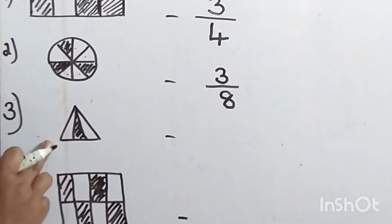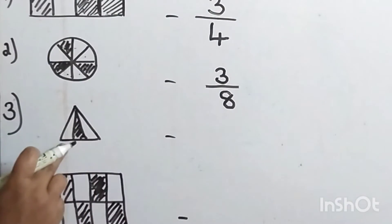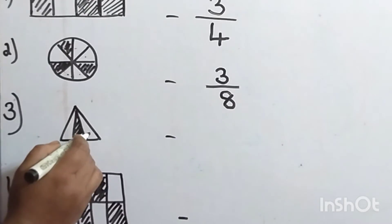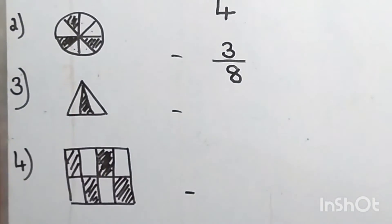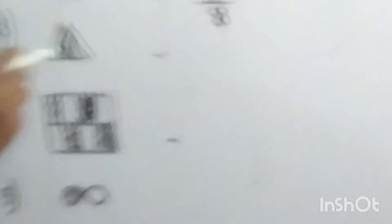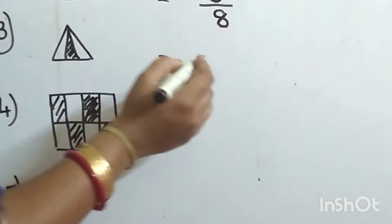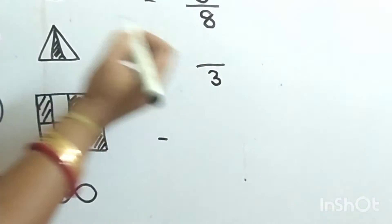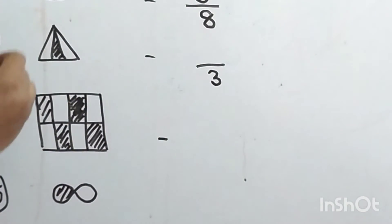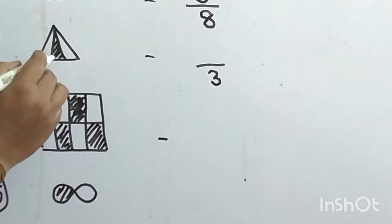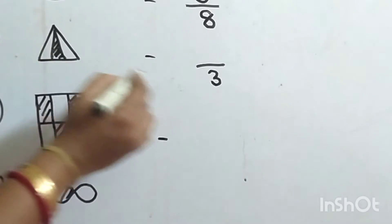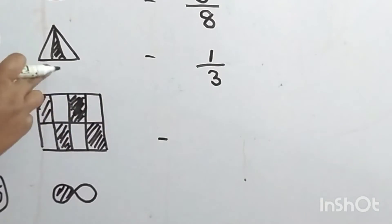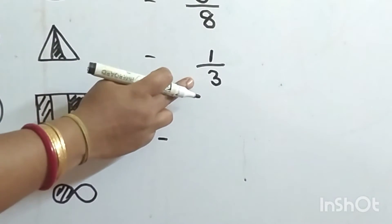Next one. Let's count the total number of parts: one, two, three. Three parts are there totally, so I'm writing three at the denominator. Now count the shaded parts — only one part is shaded. So I'm writing one in the numerator. The fraction for this figure is one by three.